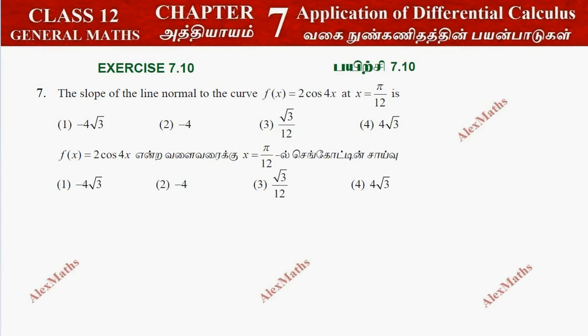Hi students, this is Alex here. Exercise 7.10, question number 7: finding the slope of the normal. I am going to show you a curve. The curve is y = 2cos(4x).